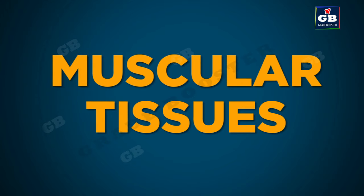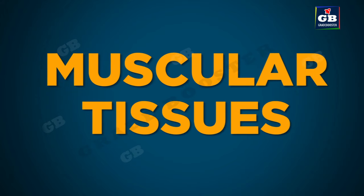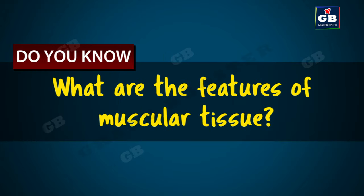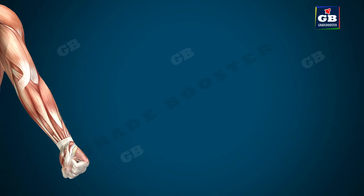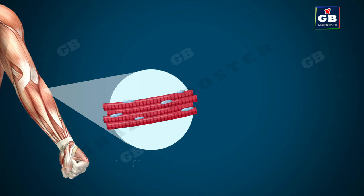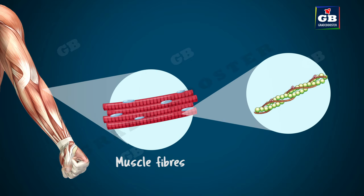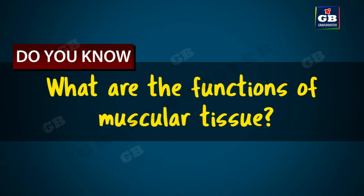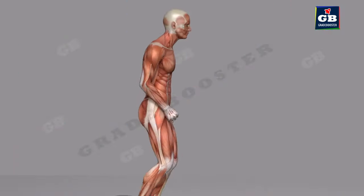Now let us learn about muscular tissue. The cells of muscular tissue are elongated and are also called muscle fibers. Muscle cells contain special proteins called contractile proteins. The muscles are able to contract and relax due to these proteins. Muscular tissue gives shape, support, and causes movement in different parts of our body.